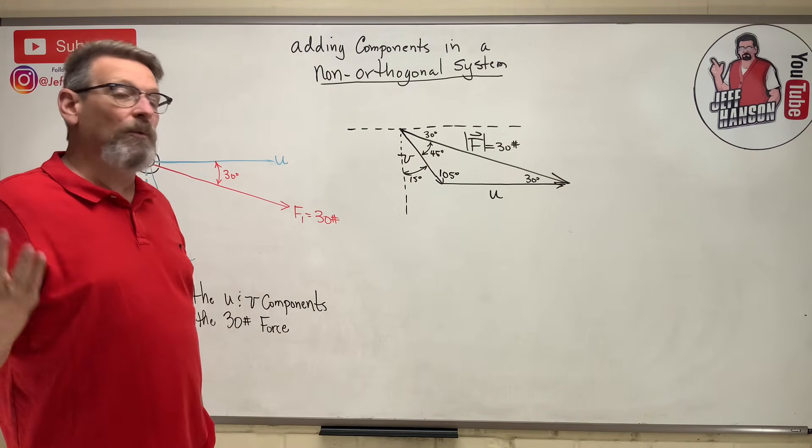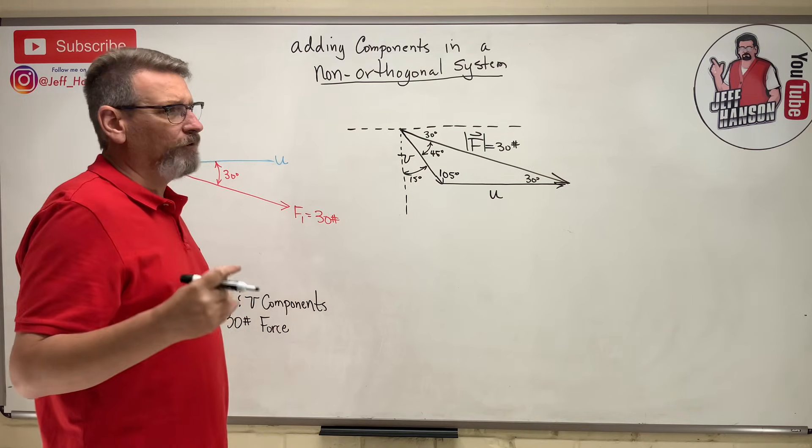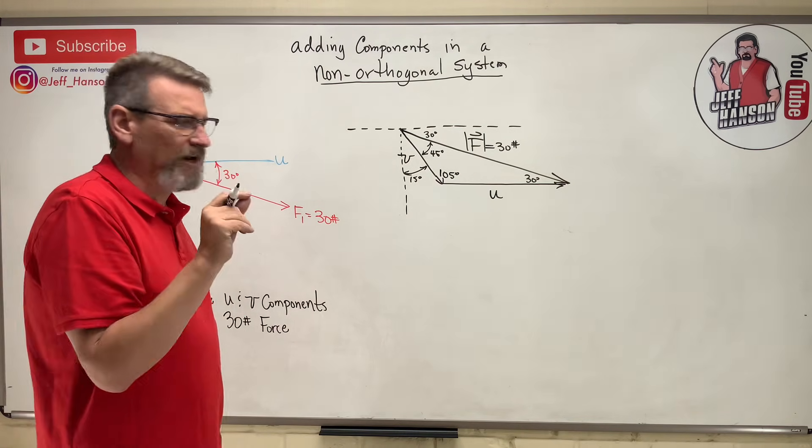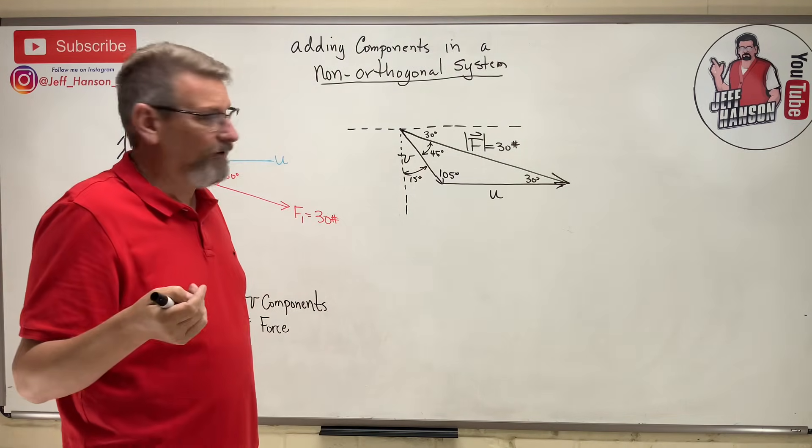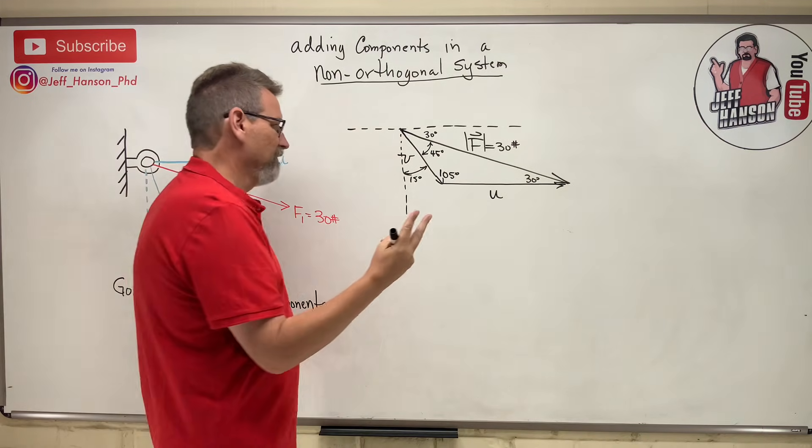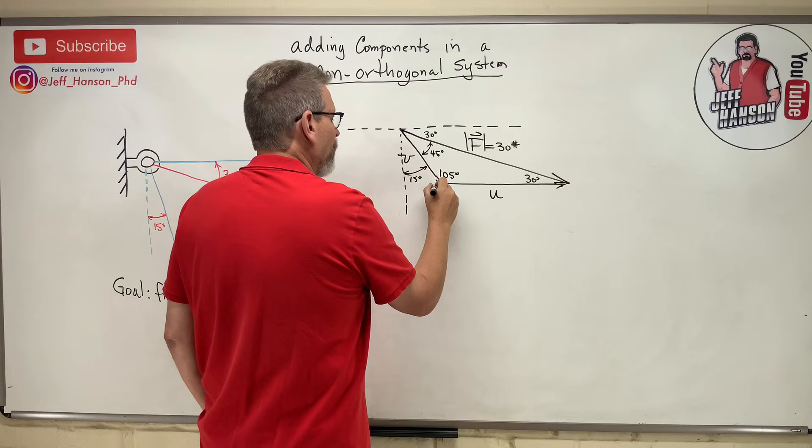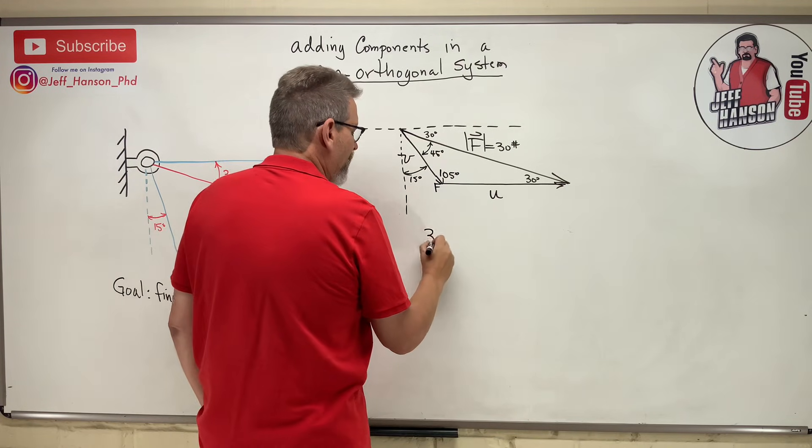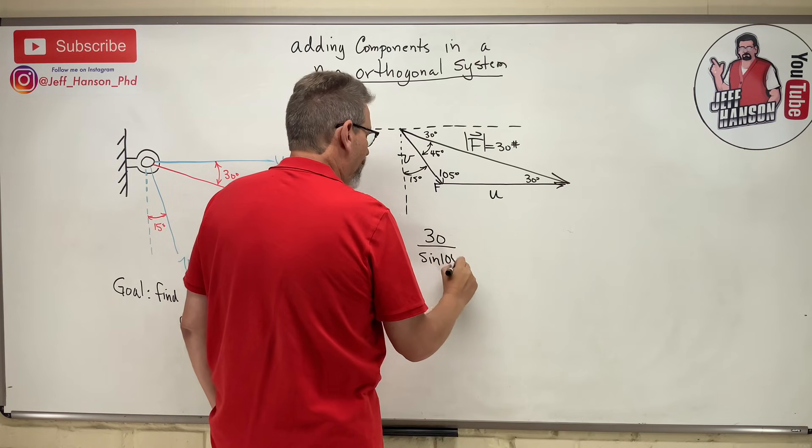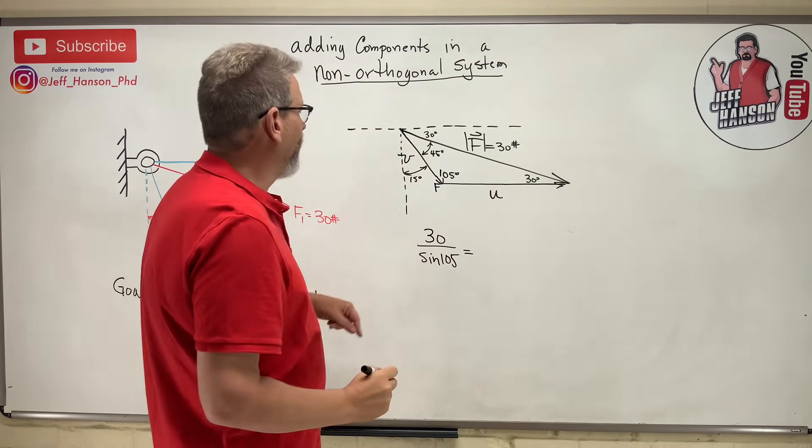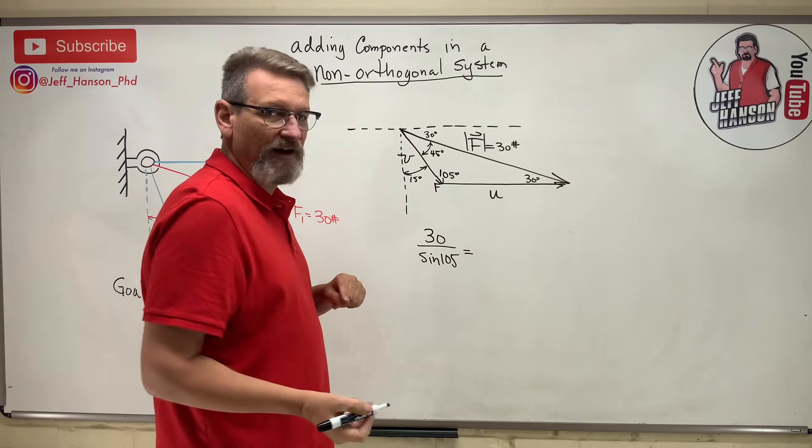Now what can we use? Can we use the law of cosines? For law of cosines we need to know side-angle-side. Do we know side-angle-side? Well, we only know one side, so that's out. Maybe the law of sines? Do I know two things that go together? Ooh, side F and angle F, right? Yes! So 30 is to the sine of 105 as - what do I want here? Oh, I need all of them, don't I? I need V and I need U - they asked me to find both of those, right? Find the U and the V components, and when I find the components I'm just talking about the magnitude.